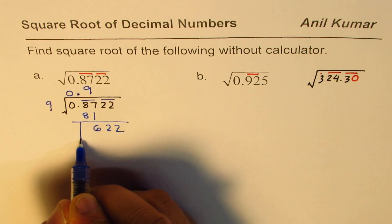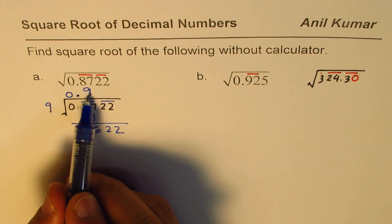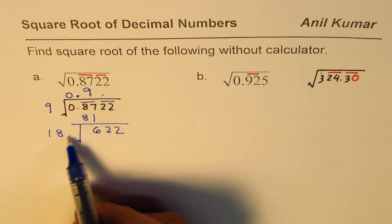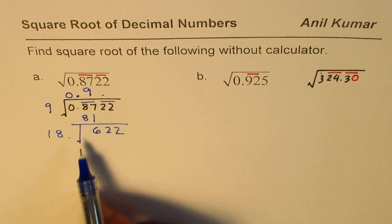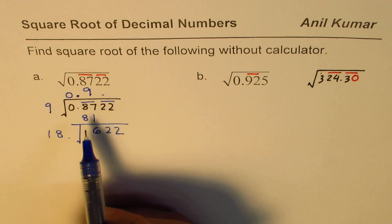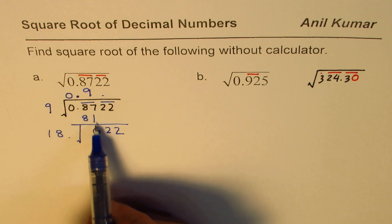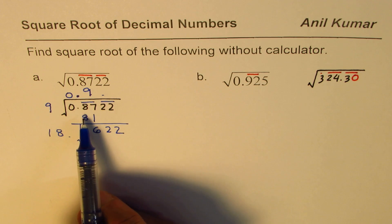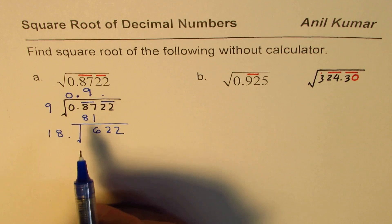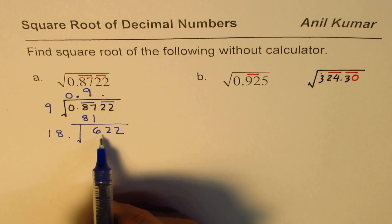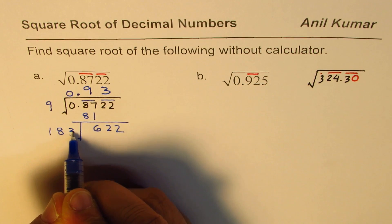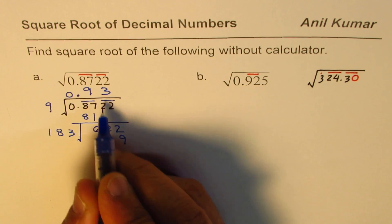Now we bring down the second set to get 622 and divide again. Twice 9 is 18, so we put 18 here and find what number comes next. We place the decimal in the quotient as soon as we bring down the set after the decimal. We can try 4: four times 184 would be bigger than 622, so we try 3. Three is the right number to place.